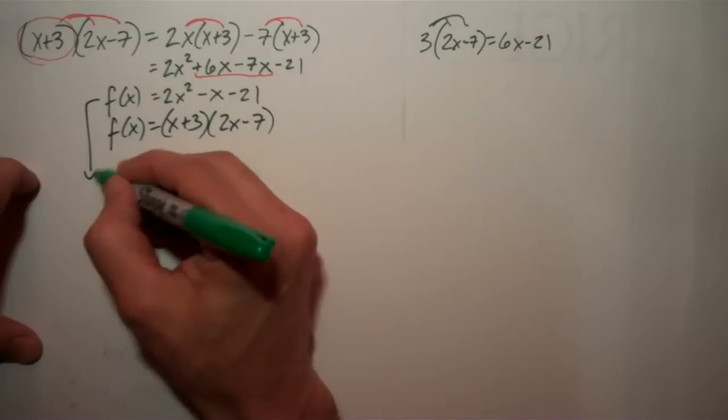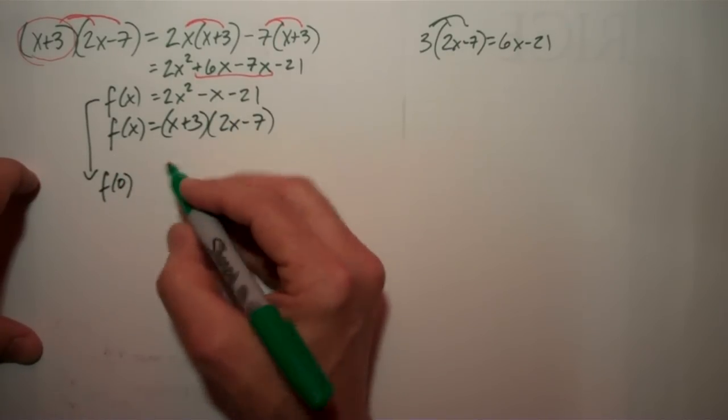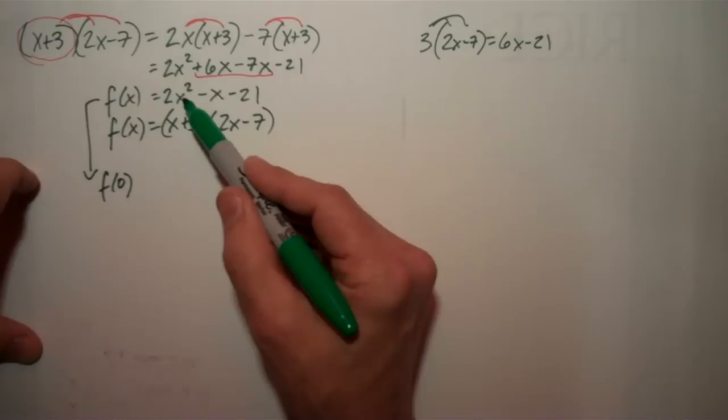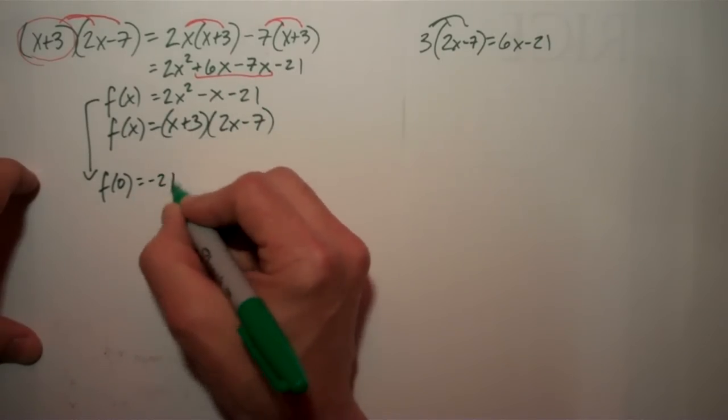Well, let's see if they really are. Let's use this one here, and I'll say, what's f of 0? 2 times 0 squared is 0, minus 0 is still 0, minus 21, and that's going to equal negative 21.